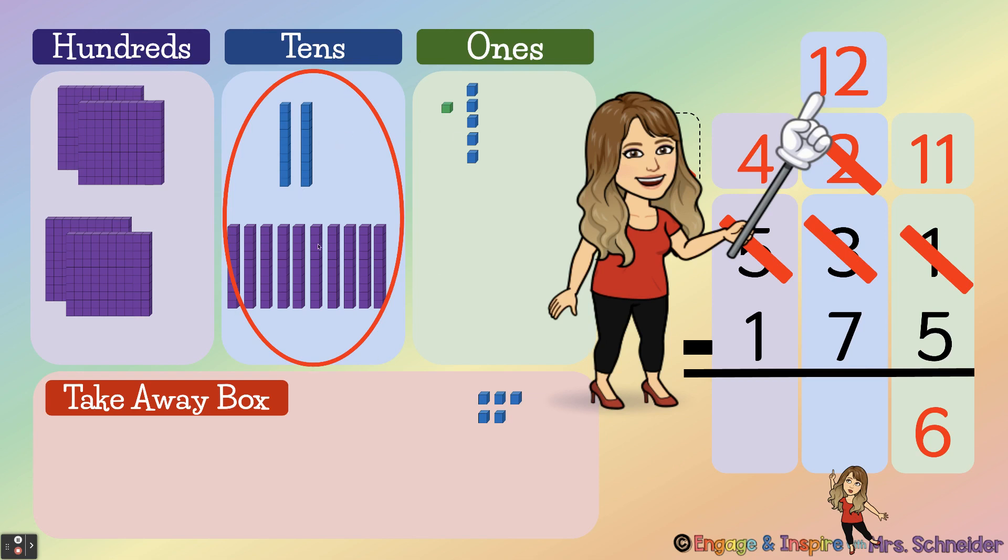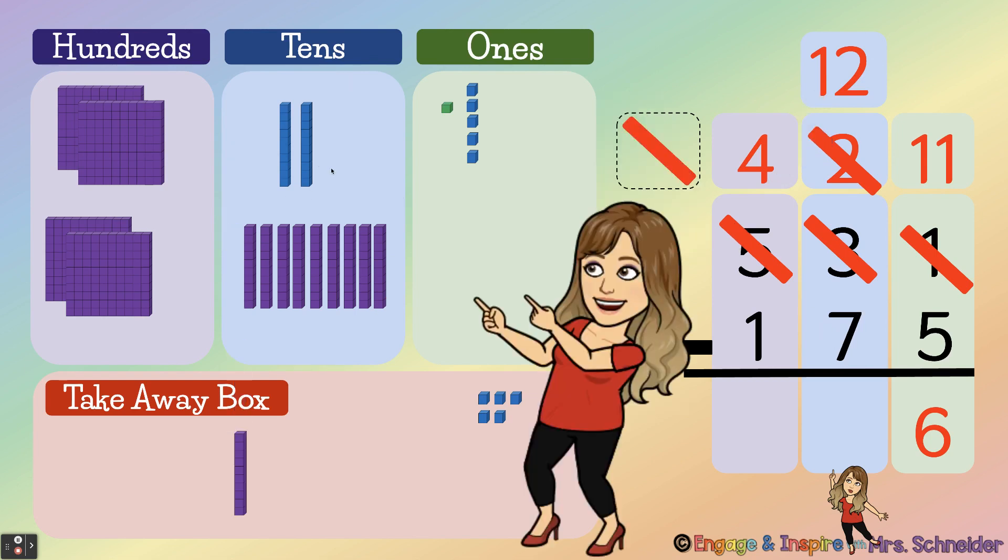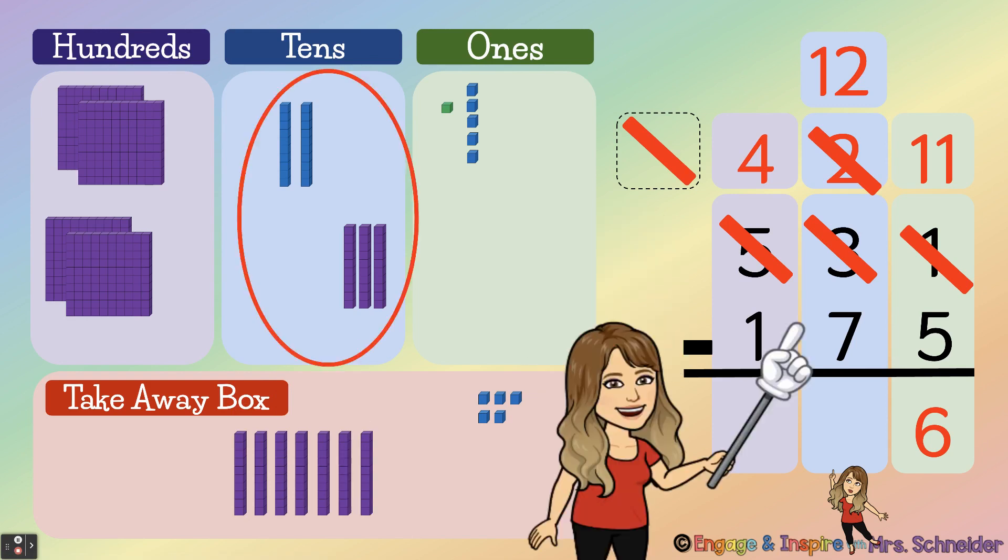All right, now I have enough tens to subtract, so I have to take away seven. So here we go. One, two, three, four, five, six, seven. And how many tens do I have left over? One, two, three, four, five, because twelve minus seven is five.